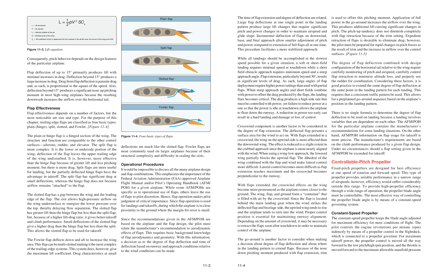Flap effectiveness depends on a number of factors, but the most noticeable are size and type. For the purpose of this chapter, trailing edge flaps are classified as four basic types: plain hinge, split, slotted, and fowler. The planar hinge flap is a hinged section of the wing, with structure and function comparable to other control surfaces such as ailerons, rudder, and elevator. The split flap is more complex — it is the lower or underside portion of the wing, and deflection leaves the upper trailing edge undisturbed. It is more effective than the hinge flap because of greater lift and less pitching moment, but there is more drag. Split flaps are more useful for landing, but partially deflected hinge flaps have the advantage in takeoff.